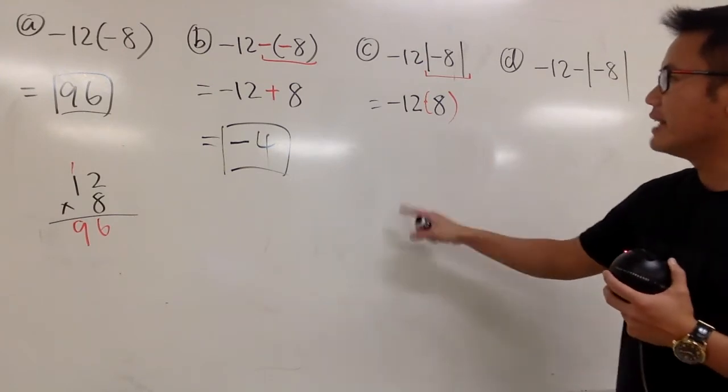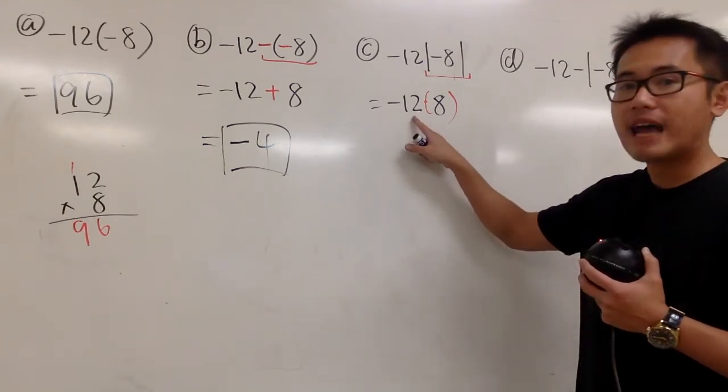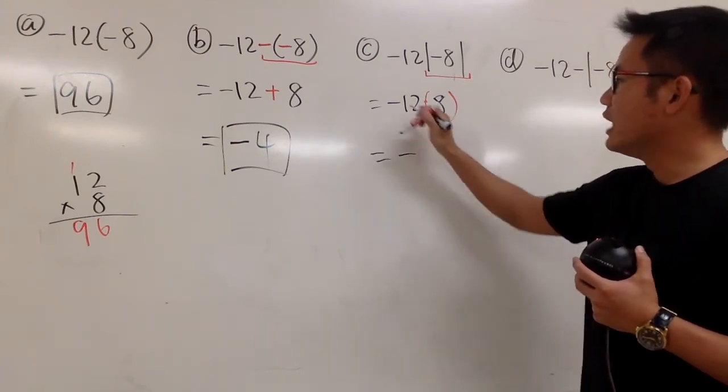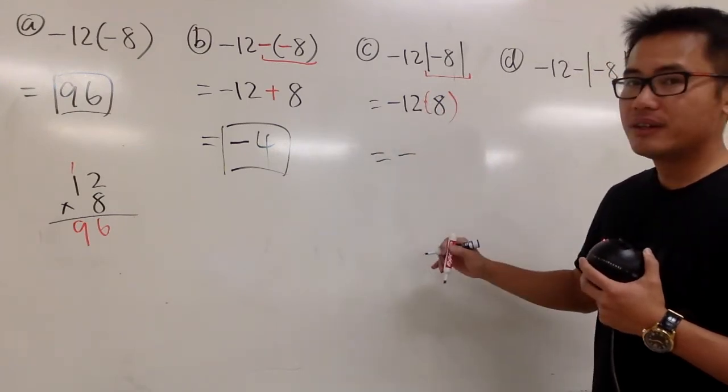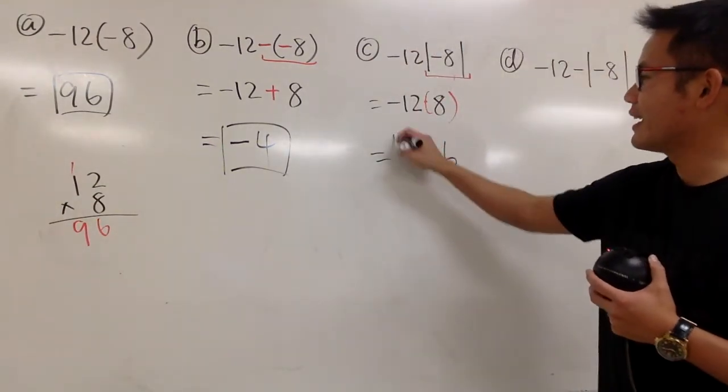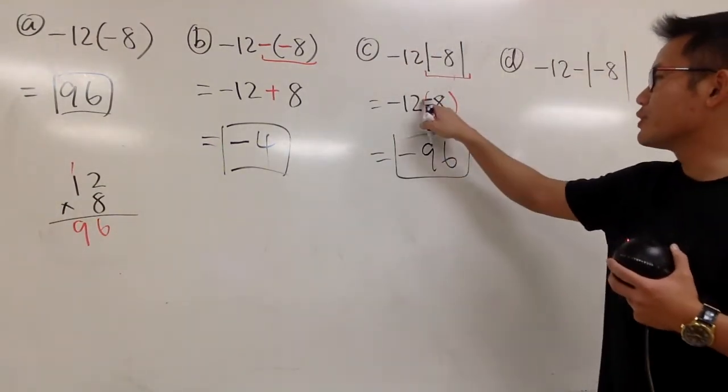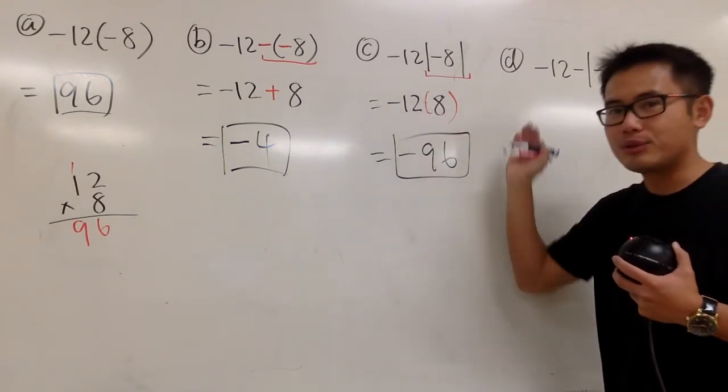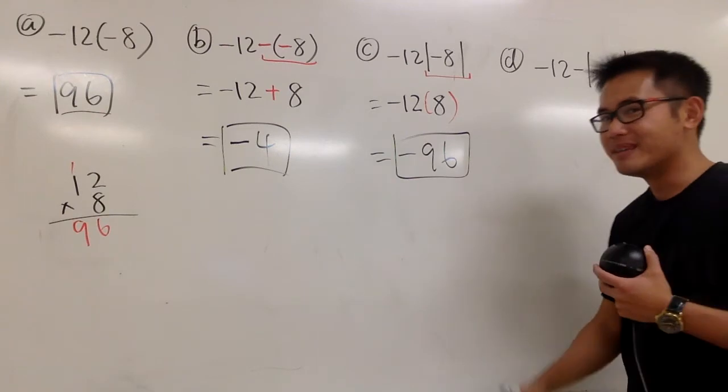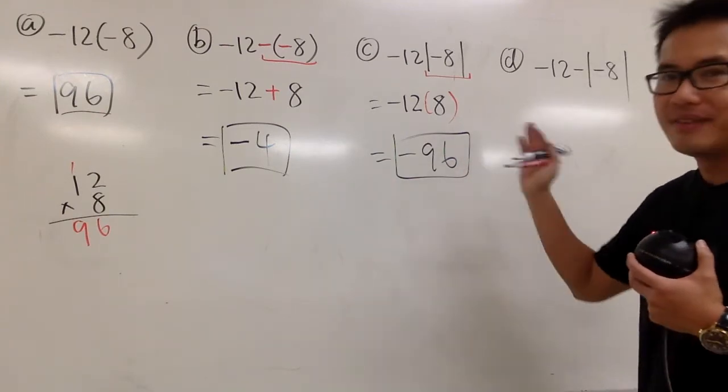In this case, we have -12 times positive 8, and the answer is negative. A negative times positive is negative. 12 times 8 is 96. You could have put just a dot, and some people like to use parenthesis. In fact, parenthesis is actually preferred. But anyway, the answer to this is negative 96.